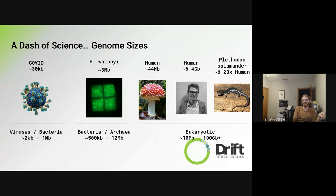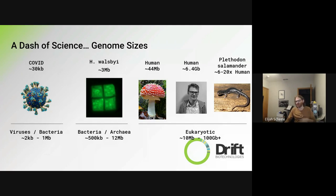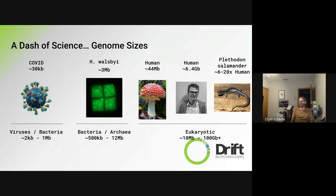More complex bacteria and archaea — more complex single-cell organisms — are between half a megabase pair and into the low tens of megabase pairs. That's a mushroom on the slide, and it is 44 megabase pairs. A human is 6.4 gigabase pairs. And really complex animals like salamanders have a genome size we're not really sure about — anywhere between 6 and 20 times the size of a human. There's just so much information contained in their genomes.